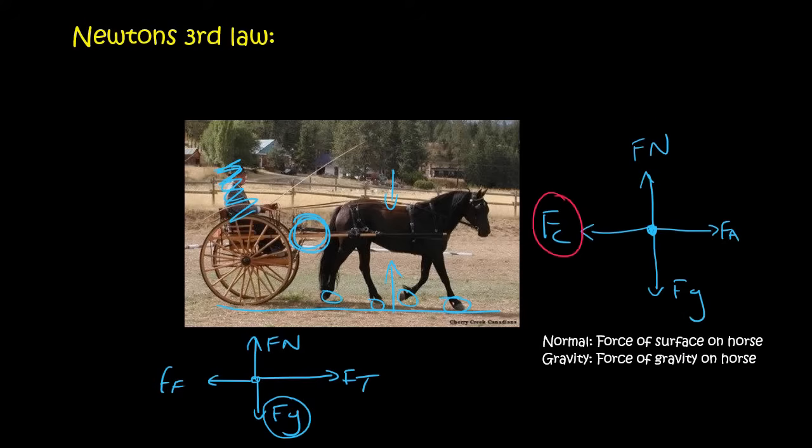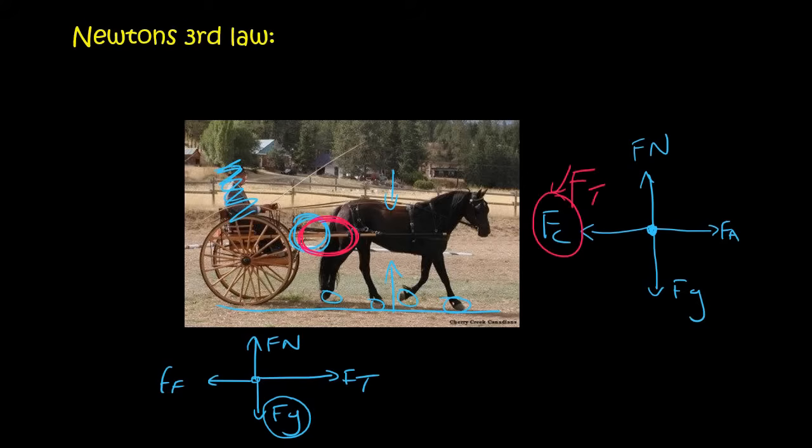Let's call it FT, the force of tension on the horse. This is FT1, and this is FT2. FT2 is the force of the horse on the cart. Now we have Newton's third law: cart on horse and horse on cart. If you can switch them like that, then it's a Newton's third law pair.